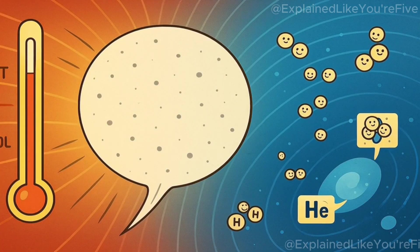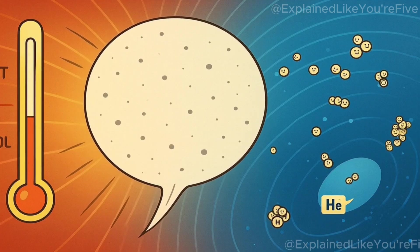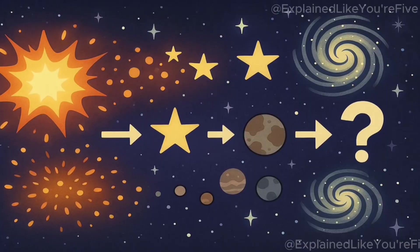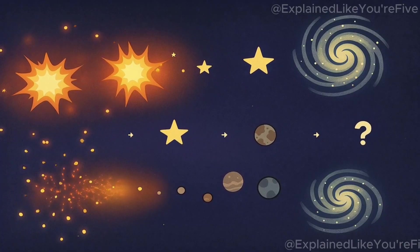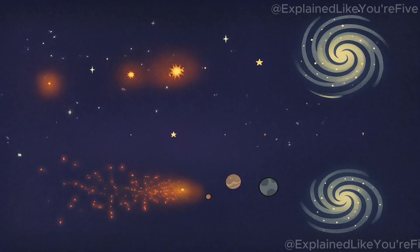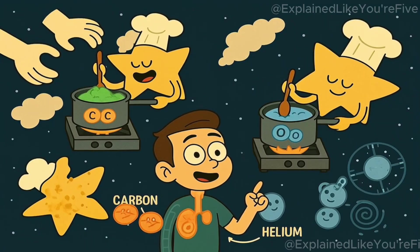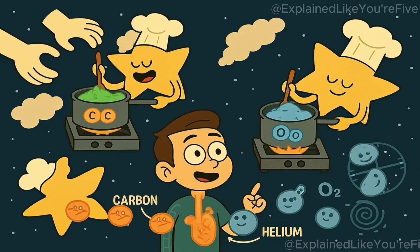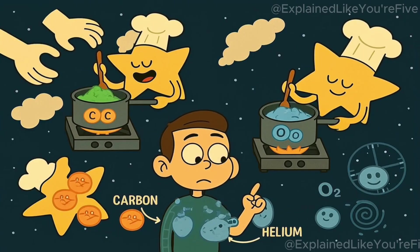As the cosmic balloon kept getting bigger, it cooled down enough for the first tiny particles to stick together and make hydrogen and helium gas. Gravity then pulled this gas into clumps that became the very first stars, which were like giant nuclear furnaces cooking up heavier elements like the carbon in your body and the oxygen that you breathe. When these massive stars died in spectacular explosions, they scattered these elements everywhere, eventually leading to new stars, planets, galaxies, and ultimately, you.